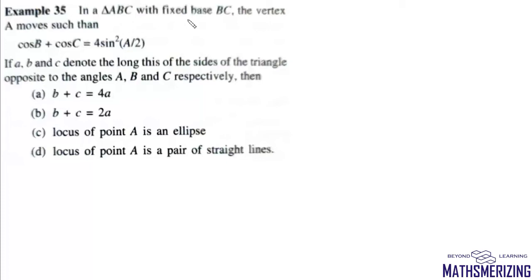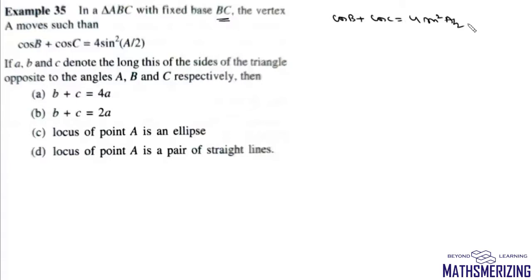The question says: in a triangle ABC with fixed base BC, the points B and C are given. The vertex A moves such that cosB + cosC = 4sin²(A/2). If a, b, c denote the sides of this triangle opposite to angles A, B, and C, then which of the following options is correct?